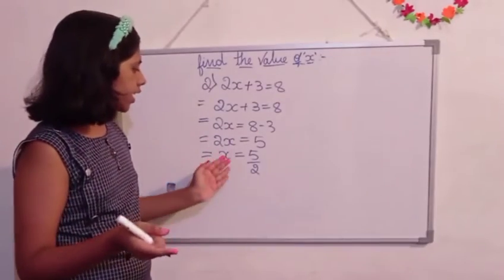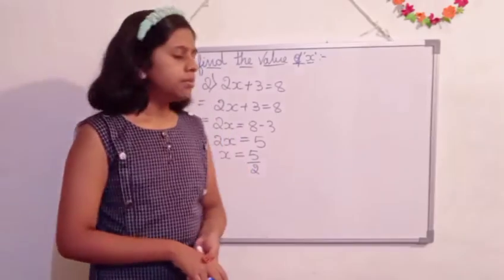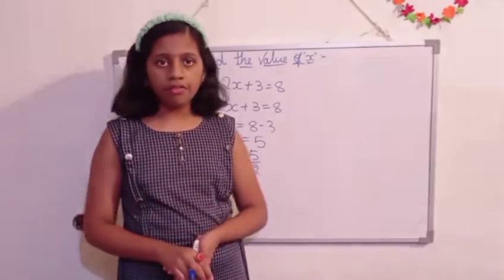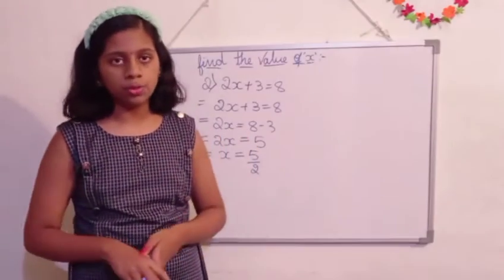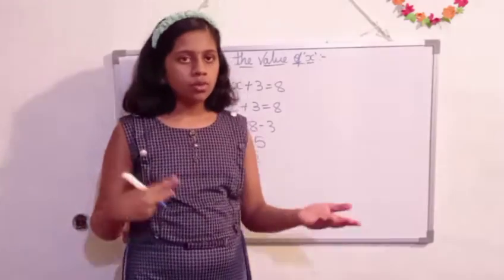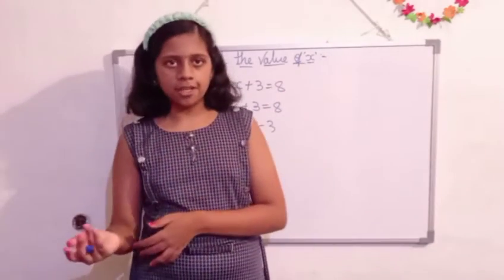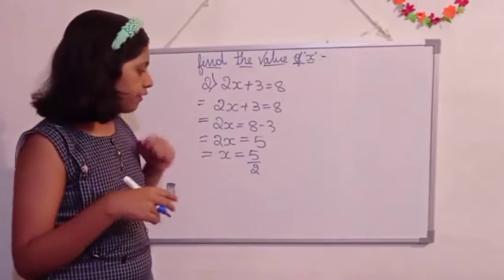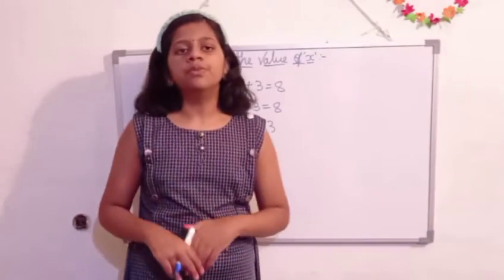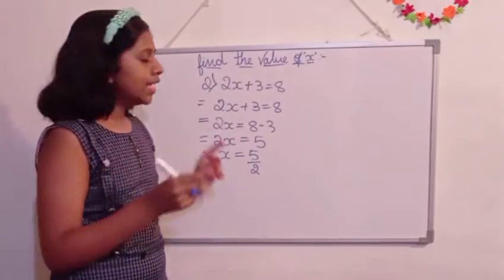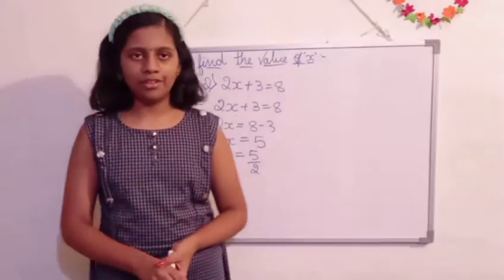Why? Because already the equation is there. Means 2 cannot be divided by 5, or 5 cannot be divided by 2. It is not possible. 2 ones are 2, 2 twos are 4, 2 threes are 6. How can we divide by 5? Is it possible? No. So we are leaving it as it is. Got it?